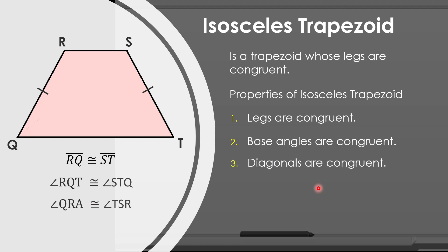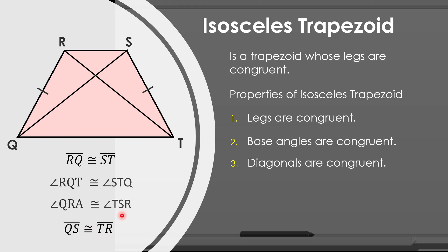Third, diagonals are congruent. Let us draw diagonal QS and diagonal TR. Since we have these diagonals, we can say that QS is congruent to TR as stated in the properties of isosceles trapezoid. Last, all properties of a trapezoid also apply.